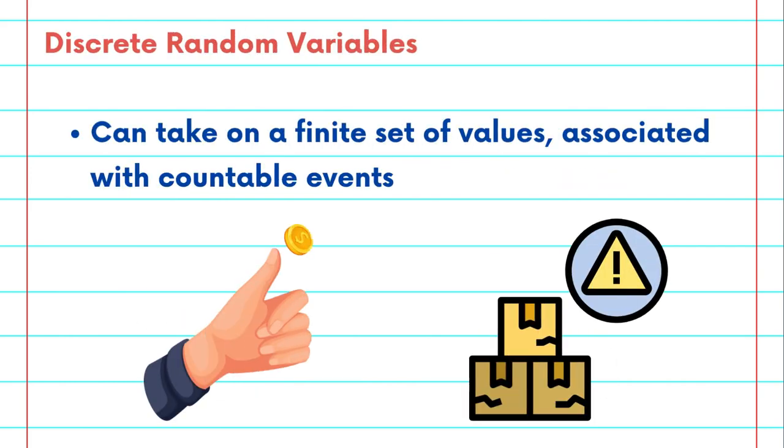Discrete random variables are variables that can take on a finite or countably infinite set of values. Examples include the number of heads when flipping a coin multiple times, or the number of defective items in a batch. Discrete random variables are often associated with countable events in the real world.